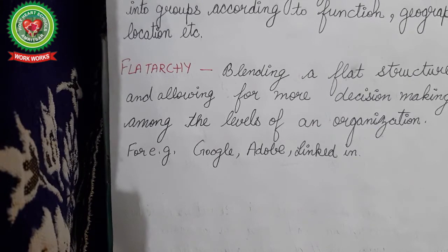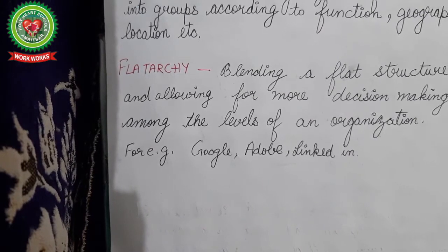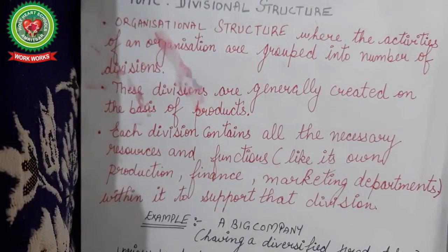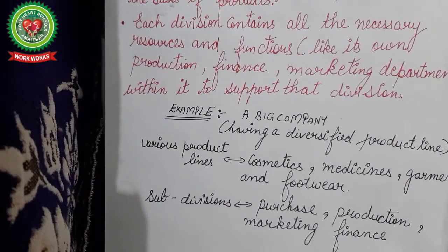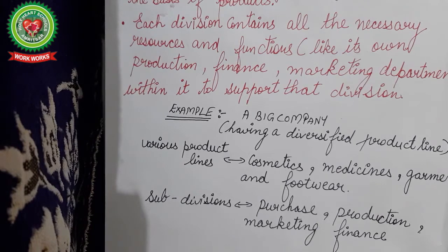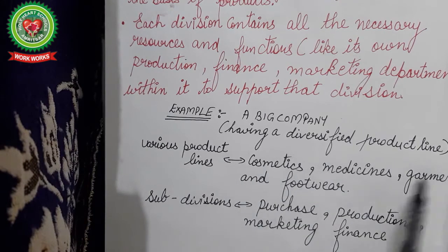Flat-archi is also called divisional structure. So what is a divisional structure? It is a structure where activities of an organization are grouped into a number of divisions. Every division is generally created on the basis of product, and every division contains all the necessary resources and functions — like its own production department, own finance department, and marketing department — within the support of a particular division.